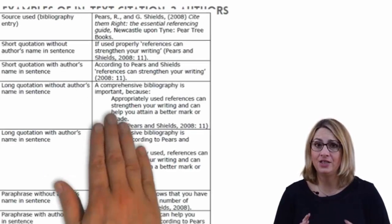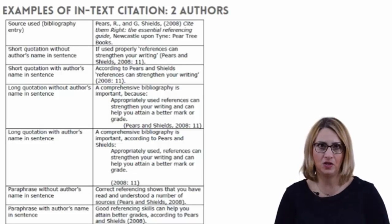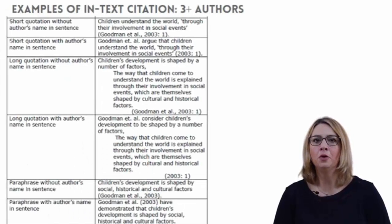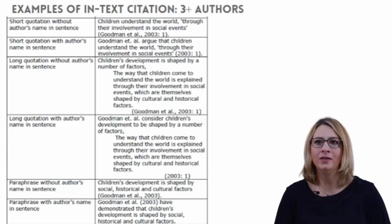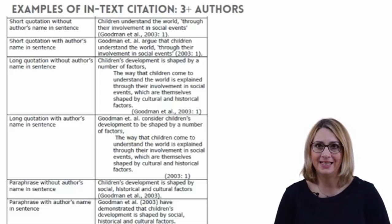If you are citing two authors, the second author is listed by initials first, then surname. For three or more authors in your in-text citation, you only need to list the first surname of the first author followed by the words et al. Remember, in your bibliography you must list every author.